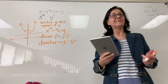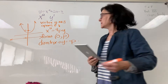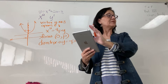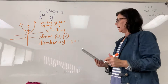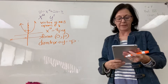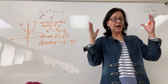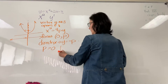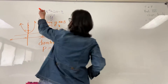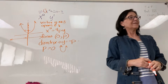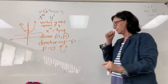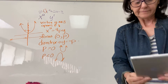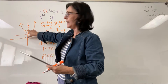Remember, parabolas have an axis of symmetry such that wherever the vertex is, what's on the left side of that axis of symmetry is a mirror image of what's on the right side. This p-value not only determines the focus and the directrix, but it determines whether the parabola opens up or opens down. When p is greater than 0, your parabola is going to open up. When p is less than 0, your parabola is going to open down.